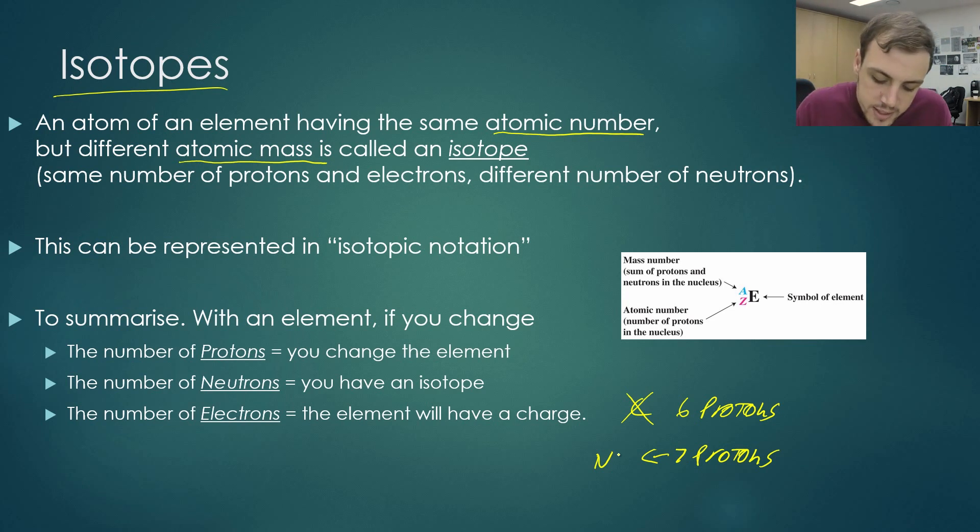Now, the reason why I included this is because it is very important to be able to differentiate what will happen if you adjust the number of protons, neutrons, or electrons in an atom, because they will be covered in subsequent modules. And I guarantee that this knowledge will be essential in your exams, because this is covered in a variety of different topics all throughout chemistry.